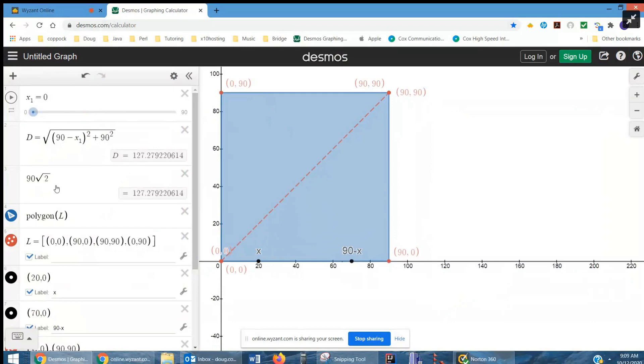Notice that when he hasn't left home plate yet, the distance is given by this formula using the Pythagorean theorem, and that's the same as 90 radical 2 because that's a 45-45 right triangle. By the time he makes it all the way to first base, the distance is 90 feet.